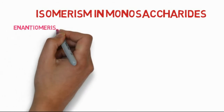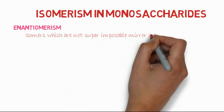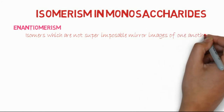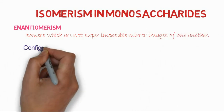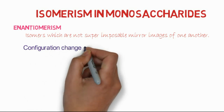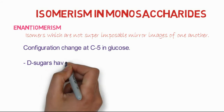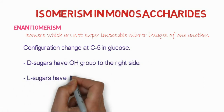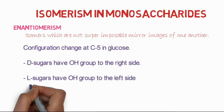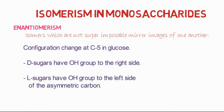The first class of isomerism in monosaccharides involves isomers which are not superimposable mirror images of one another. When we consider glucose as a standard compound, configuration changes at carbon number five. D-sugars have the hydroxyl group on the right side while L-sugars have the hydroxyl group on the left side.